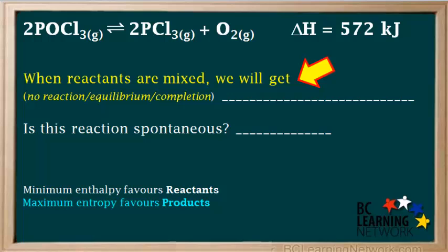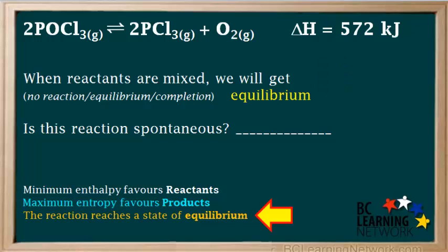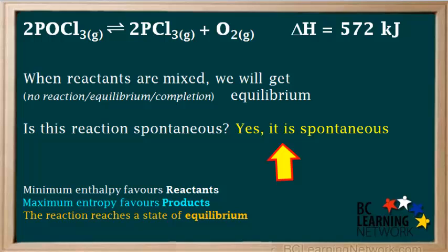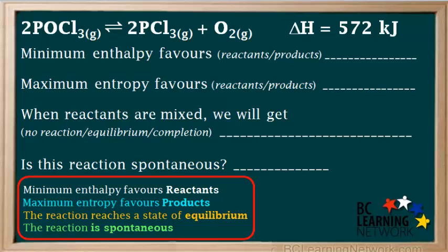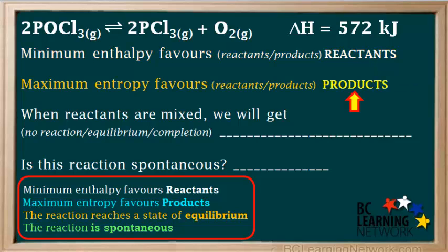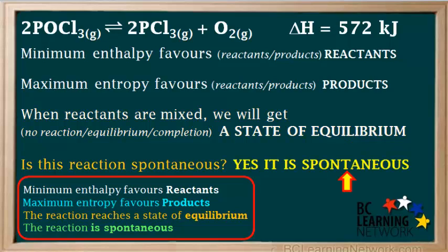So we can now answer the last two questions. When the reactants are mixed, the reaction will reach a state of equilibrium. And the reaction is spontaneous. To summarize: the tendency toward minimum enthalpy favors reactants, the tendency toward maximum entropy favors products, when the reactants are mixed the system will reach a state of equilibrium, and the reaction as written is spontaneous.